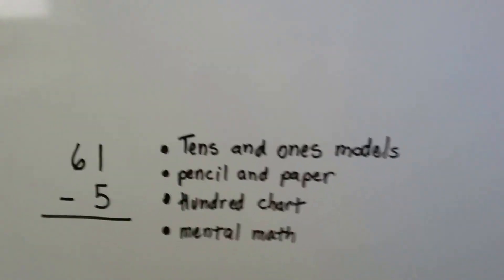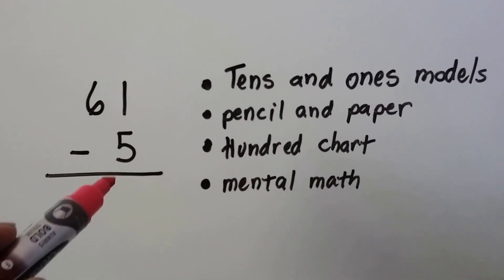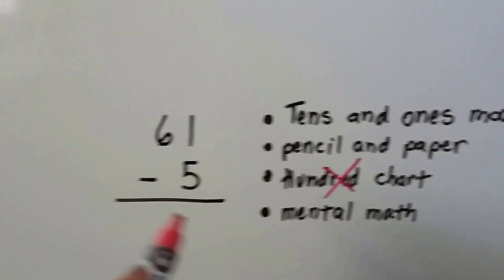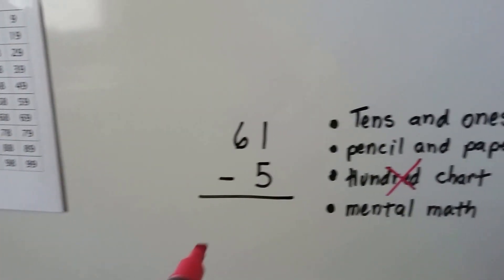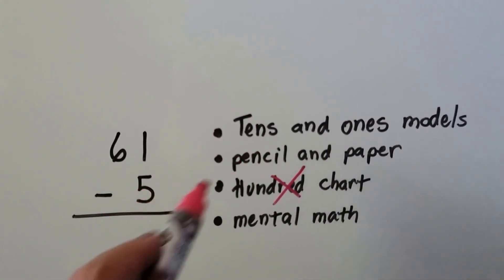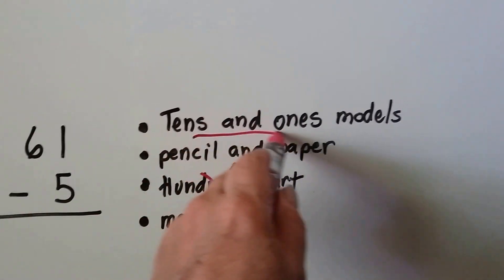Look at this one. We have 61 minus 5. We might be able to do mental math. A hundred chart won't work unless we counted back each square five times. Well, then it might work. We're only taking away five. So tens and ones models, it might work. But let's just do the pencil and paper one.